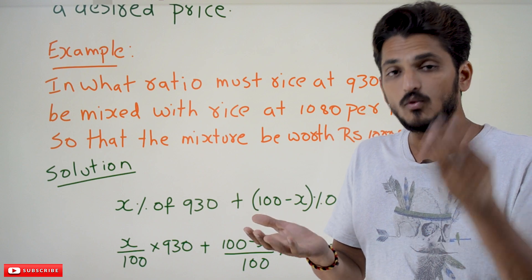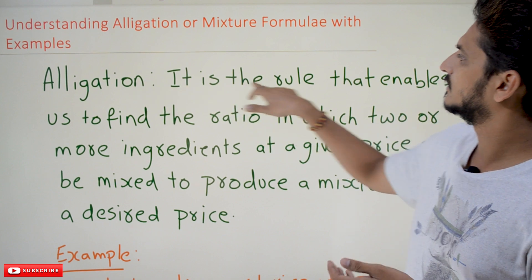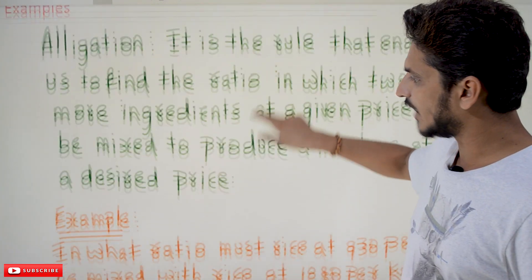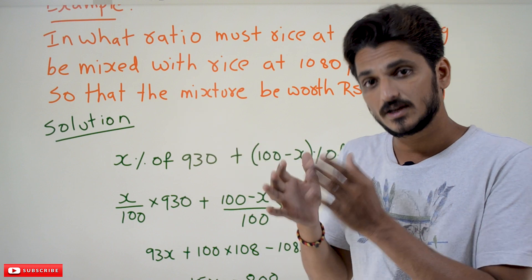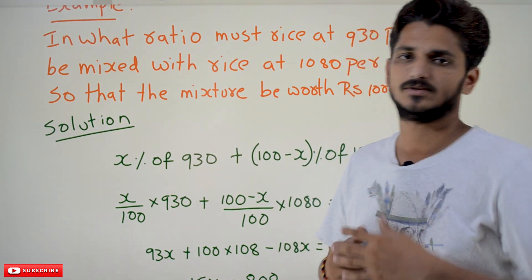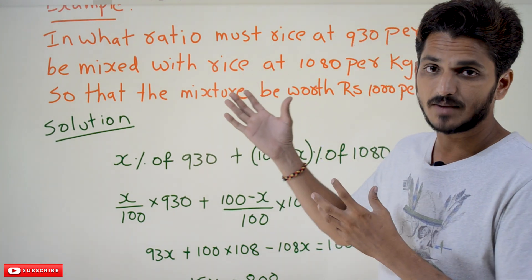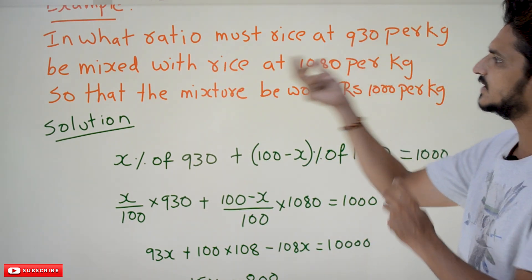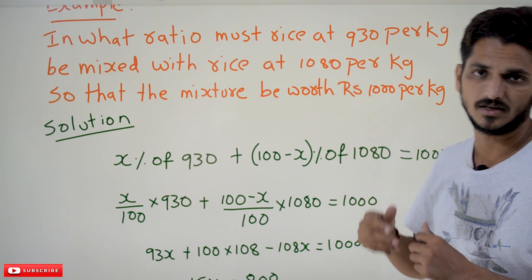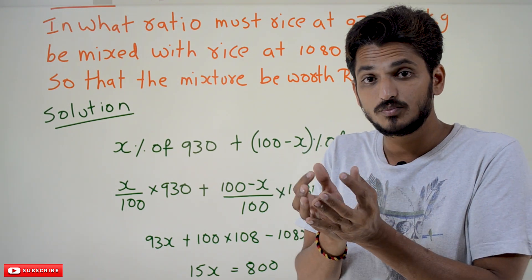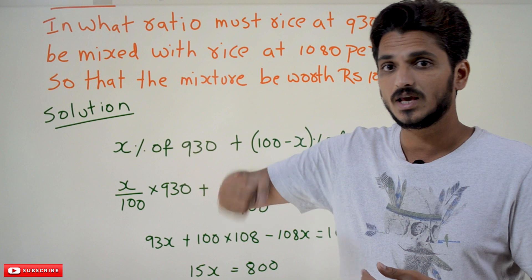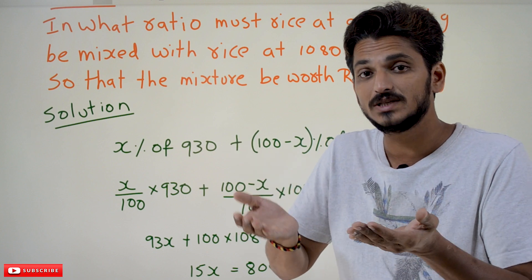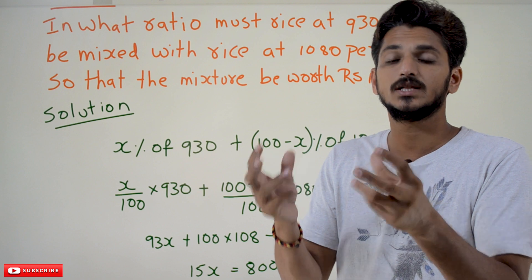To identify the ratio at which we need to mix these, that is what the rule of allegation enables us to find. Before going into the rule, we will understand this example with percentages for a deeper understanding, since we already discussed these types of examples in previous classes. Rice one costs ₹930 per kg, rice two costs ₹1080 per kg, and we need the mixture to cost ₹1000 per kg.